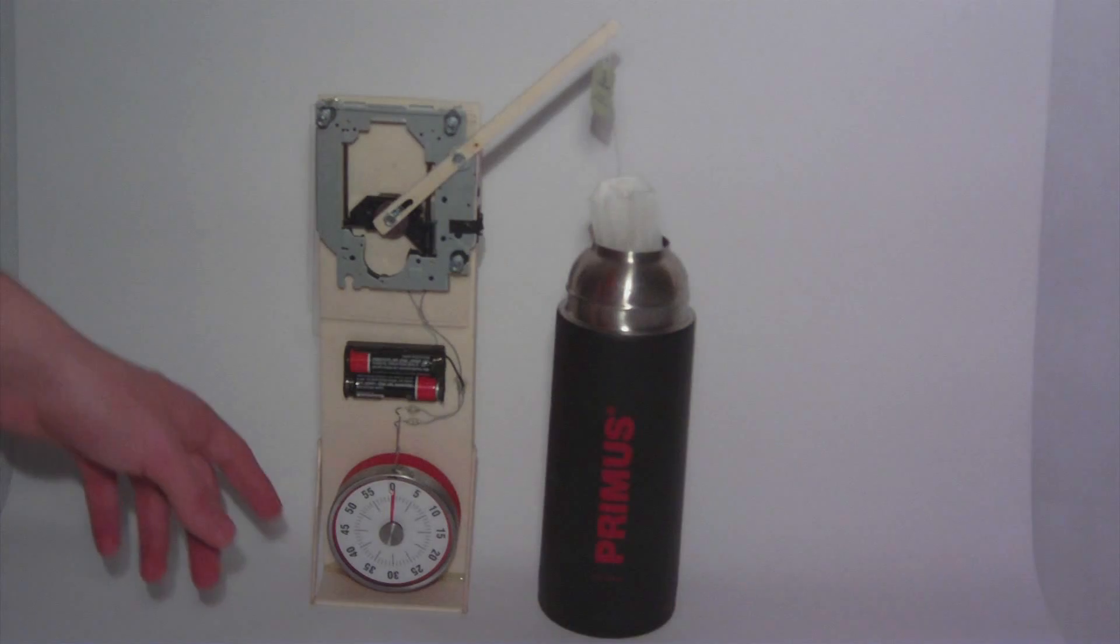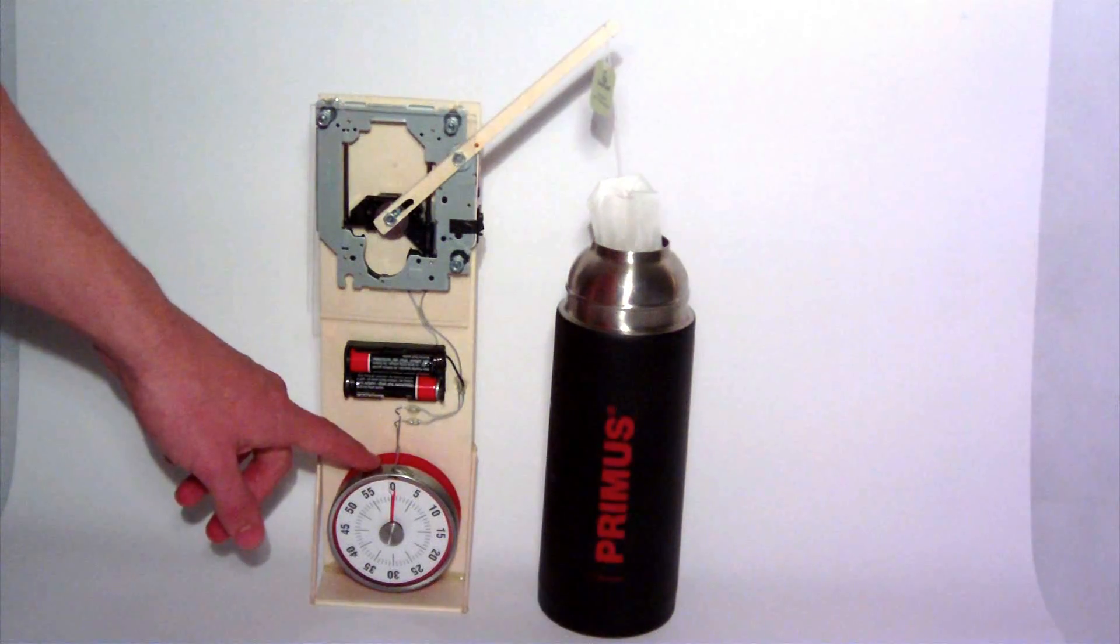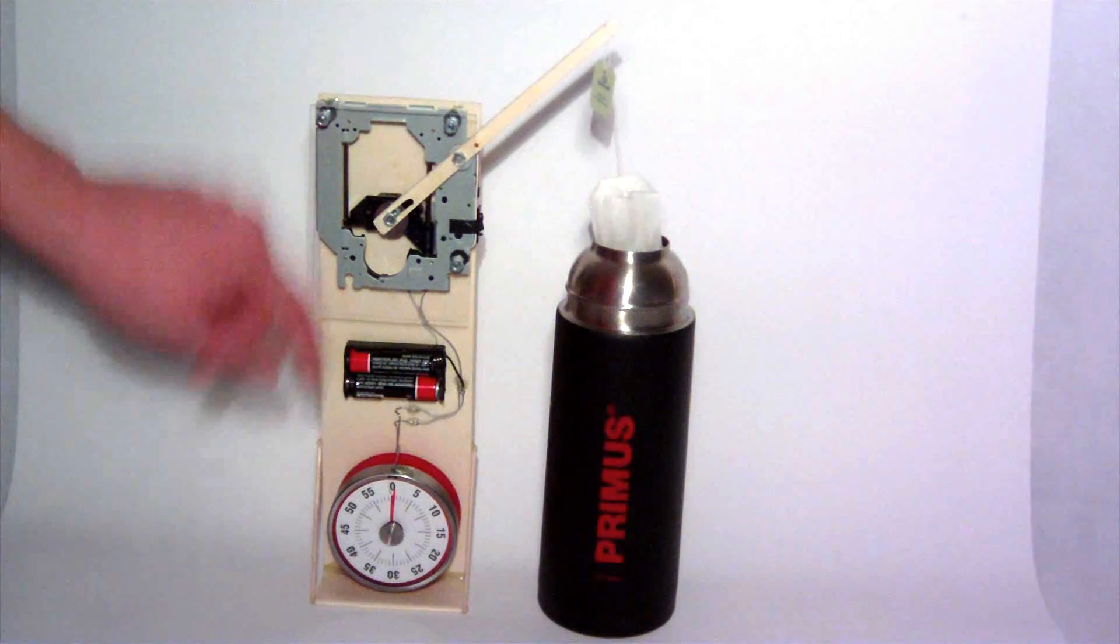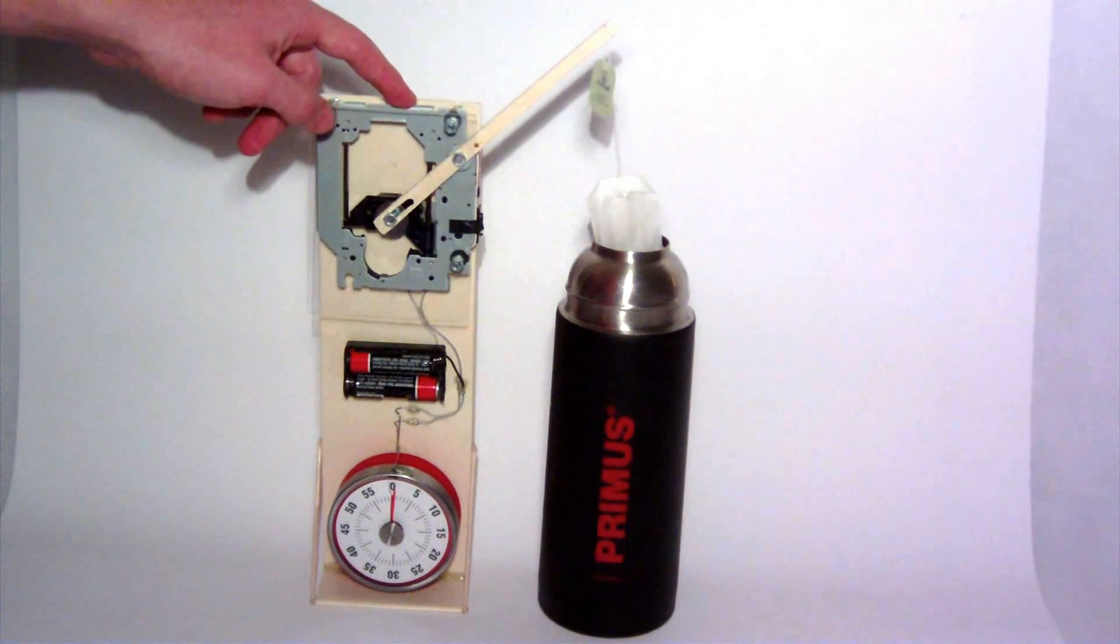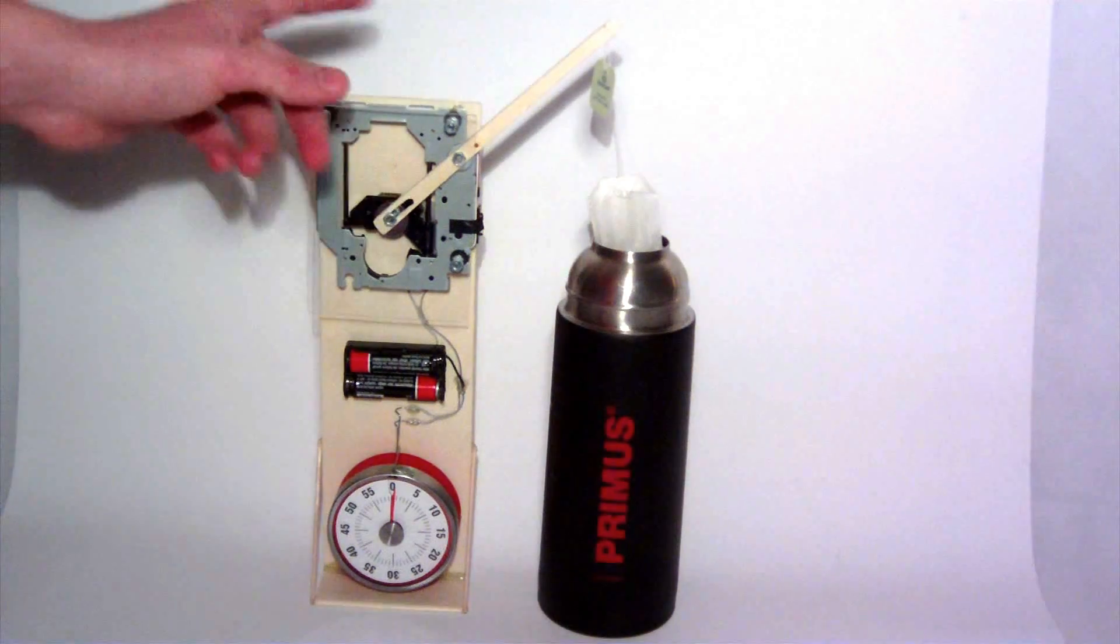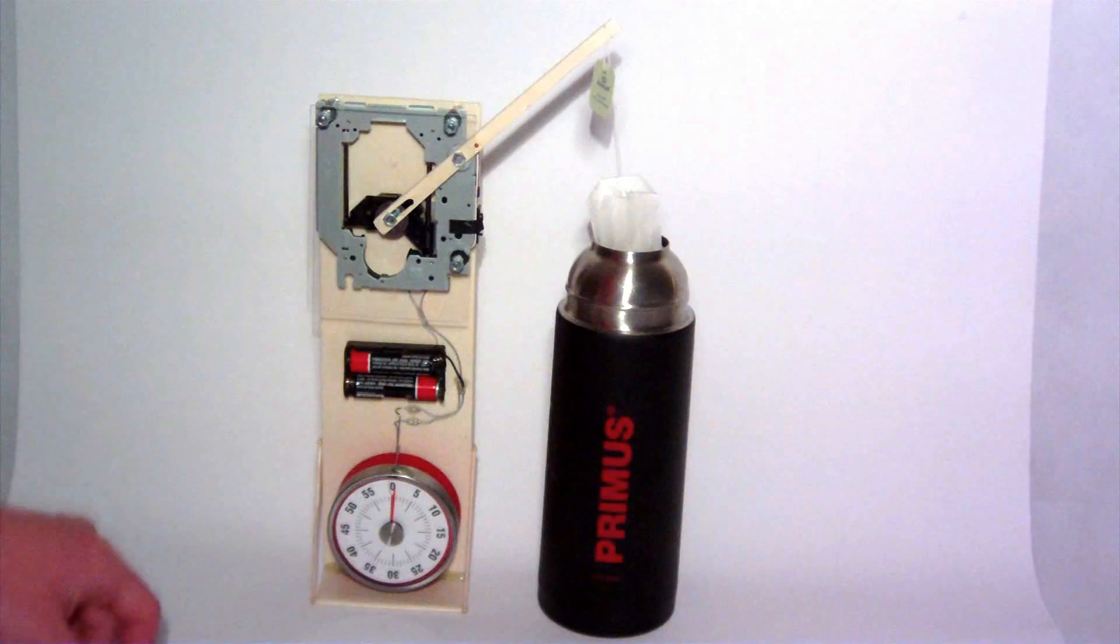This is my homemade tea timer. We have a 3 euro kitchen timer here. We have two AA batteries and a battery holder. This is the inner workings from a CD drive. Some pieces of wood, some screws, your tea bag and your teapot.